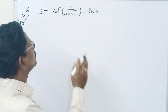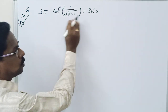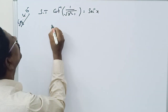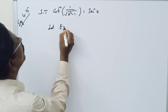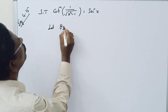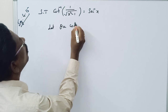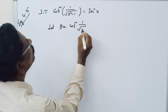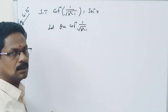Welcome to molecular mass. We need to show that this is — let theta equal to cot inverse of 1 by root of x squared minus 1.